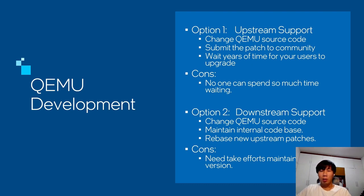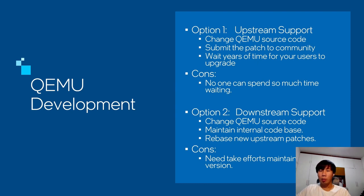The problem with that approach is we don't really have time for it — nobody wants to wait years. The second option is downstream: a local implementation you can apply to your own QEMU build that extends functionality. But if you apply an internal patch it will break with probably every single QEMU release update, or you need to fully maintain an internal version of QEMU.